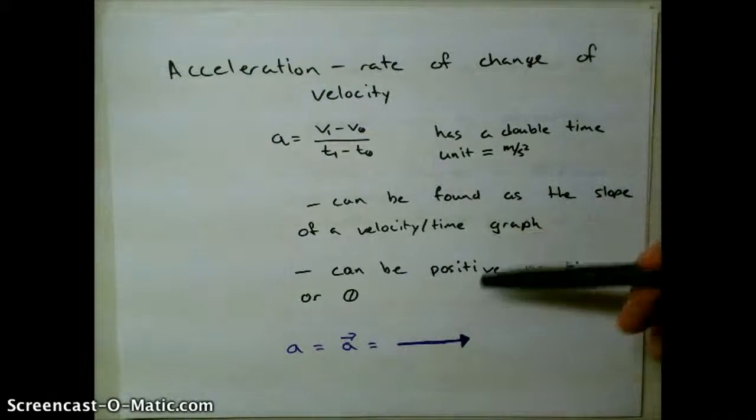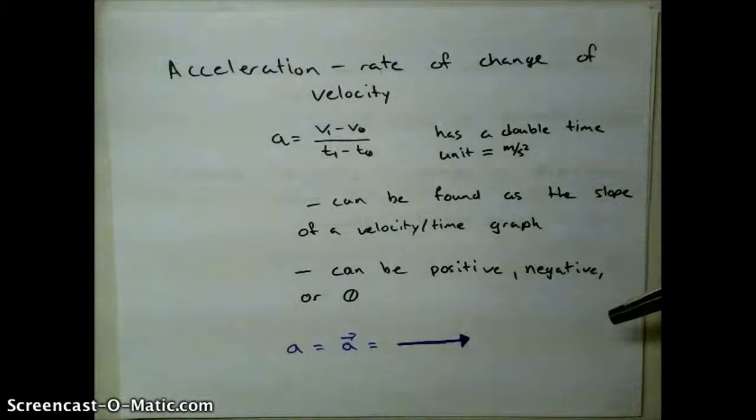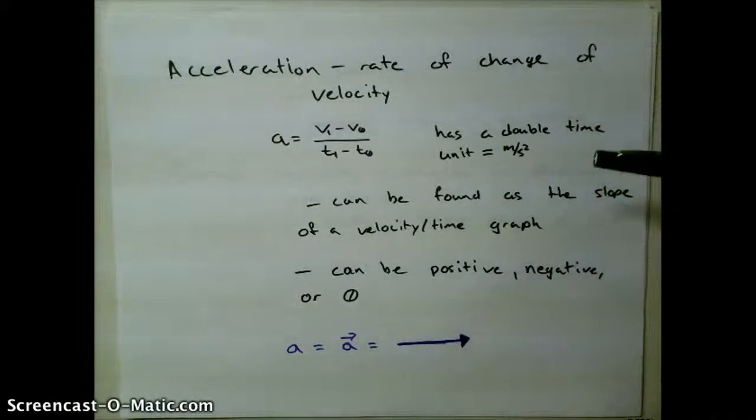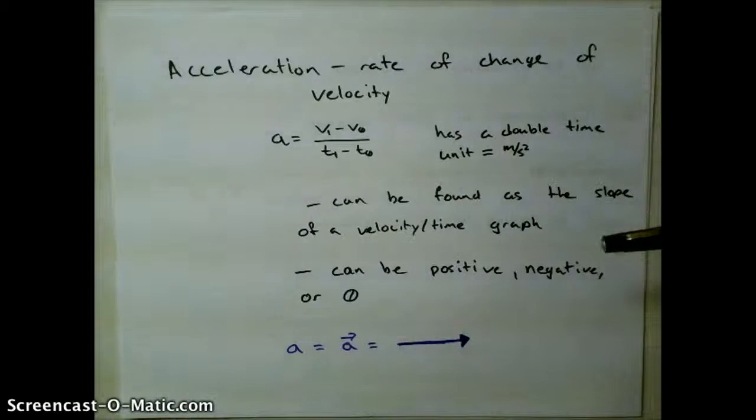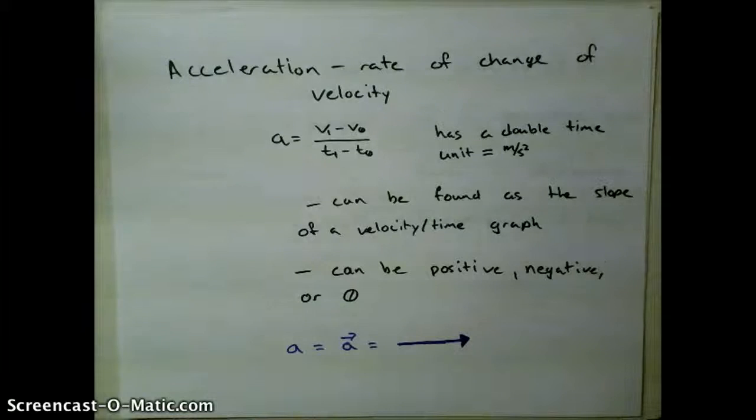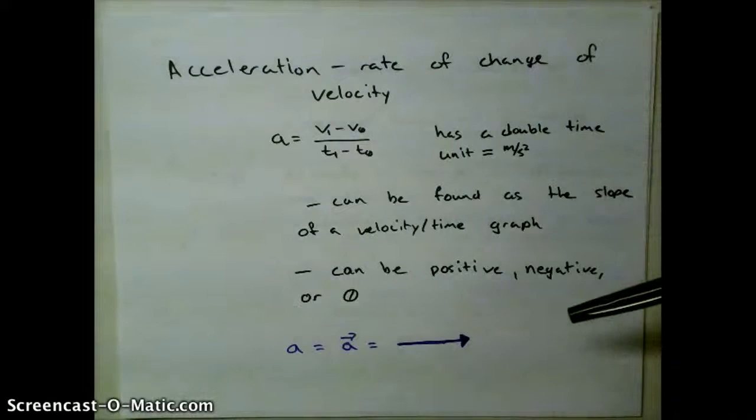Acceleration can be either a positive, negative, or a zero value. So we could be speeding up, which would be a positive value. Slowing down would be a negative acceleration. Or if we're staying at a constant speed, then our acceleration is zero.